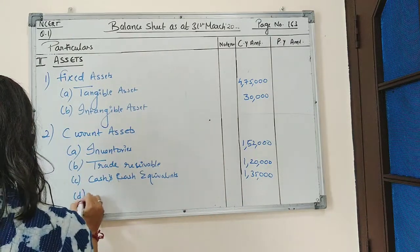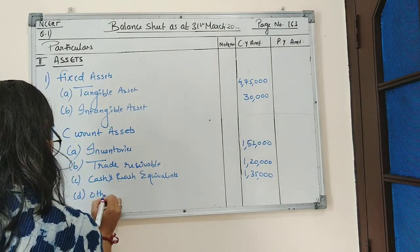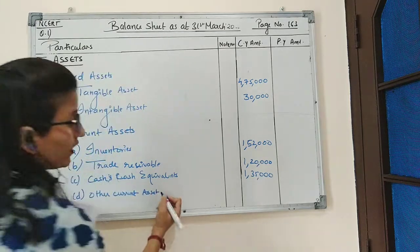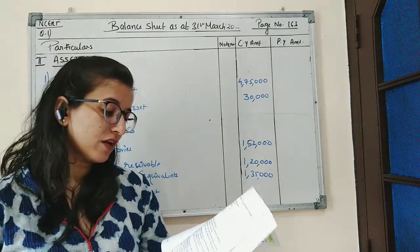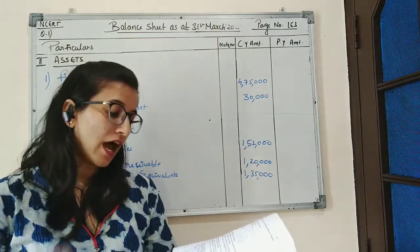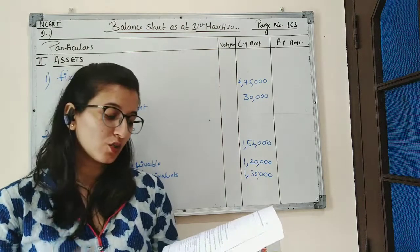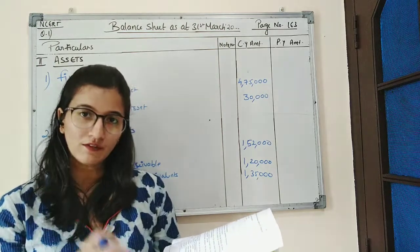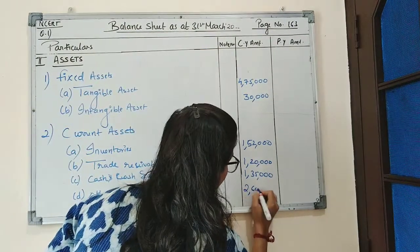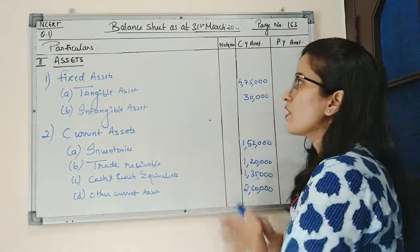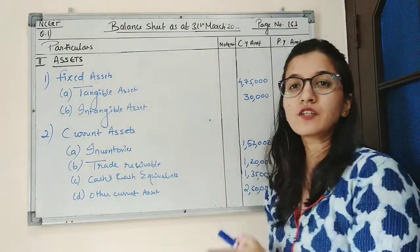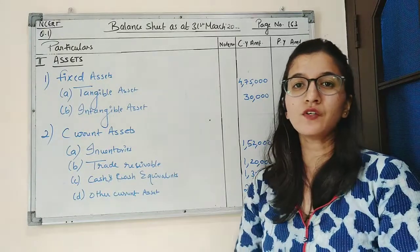The last sub-part is other current assets. In the question, other current assets include preliminary expenses amounting to ₹2,40,000 and discount on issue of shares amounting to ₹20,000. So the total is ₹2,40,000 plus ₹20,000, which is ₹2,60,000. This is how a question based on balance sheet is to be solved. In the next session we will continue with some more questions. That's all for today. Thank you.